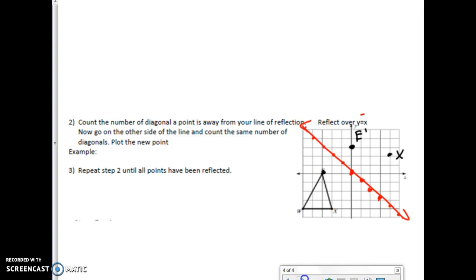And then, W is 1, 2, 3, 4 and a half. Half, 1, 2, 3, 4 to get W.